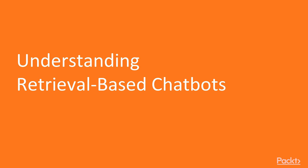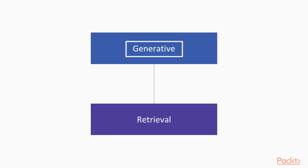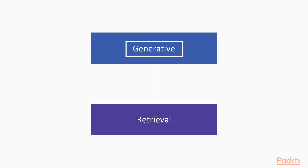In the first video, we will take a look at various types of chatbots and pick a suitable type for our first bot. There are two types of chatbots: generative and retrieval. In generative chatbots, these bots generate responses using natural language processing techniques. In retrieval chatbots, these bots depend on a predefined database of questions and answers.